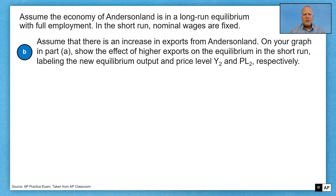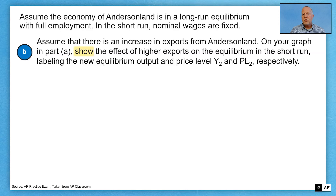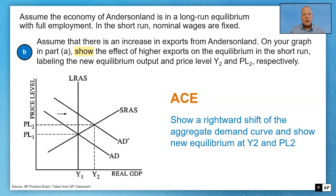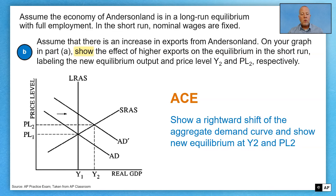Part B: assume there's an increase in exports from Anderson Land. On your graph in Part A, show the effects of higher exports on the equilibrium in the short run, labeling new equilibrium output and price level Y2 and PL2 respectively. There's your verb — show. I'm going to go back to my original graph, not draw a new one. We're going to show a rightward shift of AD. As a result of AD shifting right, price level goes up to PL2 — that's demand-pull inflation — and output goes up from Y1 to Y2, so we're operating beyond full employment. Follow directions and you already have three points.